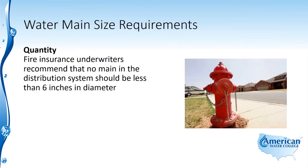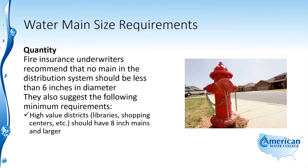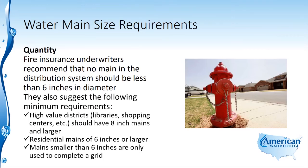Fire insurance underwriters recommend that no main in the distribution system should be less than 6 inches in diameter. Minimum requirements include: high value districts such as libraries and shopping centers should have 8-inch mains and larger; residential mains should be 6 inches or larger; and mains smaller than 6 inches are only used to complete a grid.